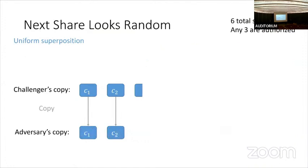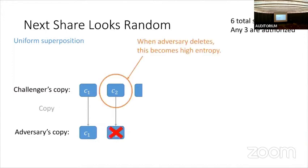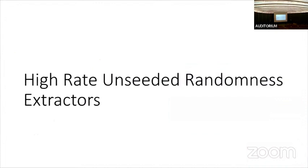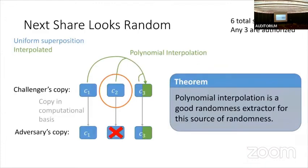With this change of perspective, I'd like to argue that the next share always looks random. This is clearly true for the first two-and-a-bit shares because those shares are actually truly random. Next, we can show that when the adversary deletes a share — which it must do before receiving the third share — the challenger's copy of the actual share becomes high entropy in the adversary's view. We then show that polynomial interpolation acts as a good randomness extractor for this source of randomness.